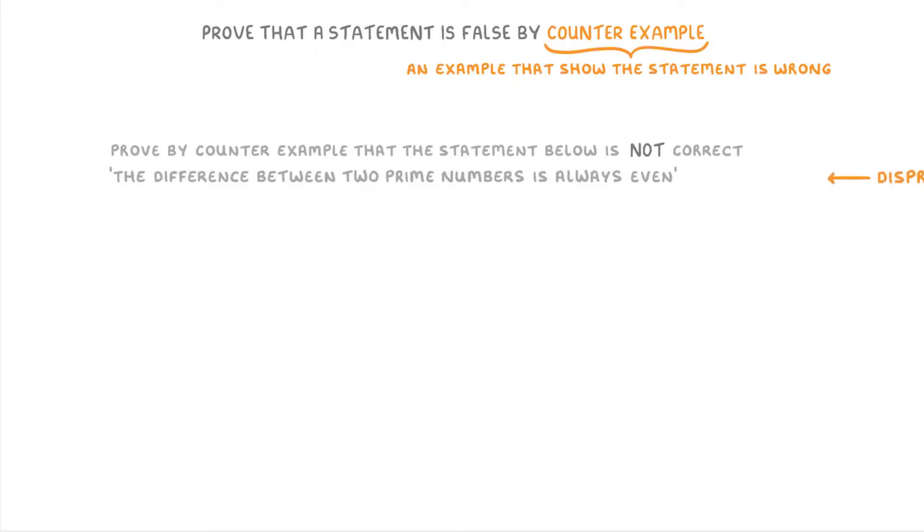So basically, we're trying to disprove this statement by providing a counterexample where the difference between two prime numbers isn't even. So in other words, where the difference is odd.